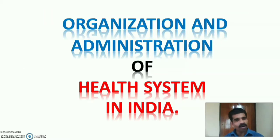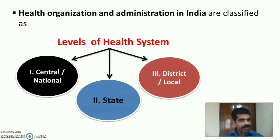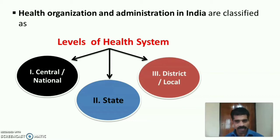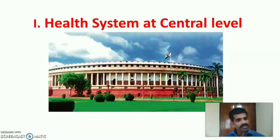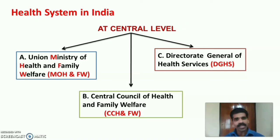Health organization and administration in India are classified into three levels: central or national level, state level, and district or local level. At the central level, there are three main organizations.